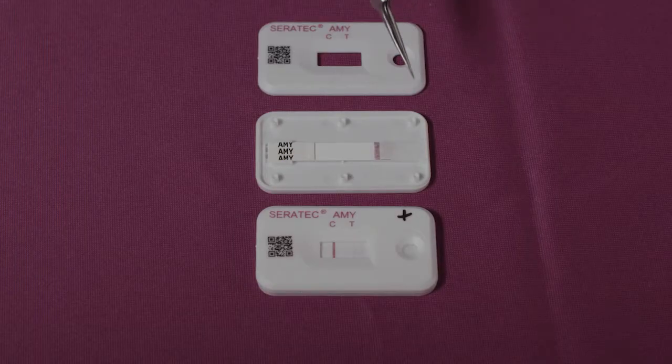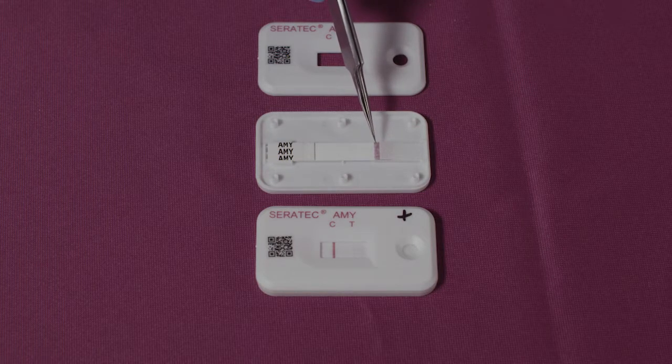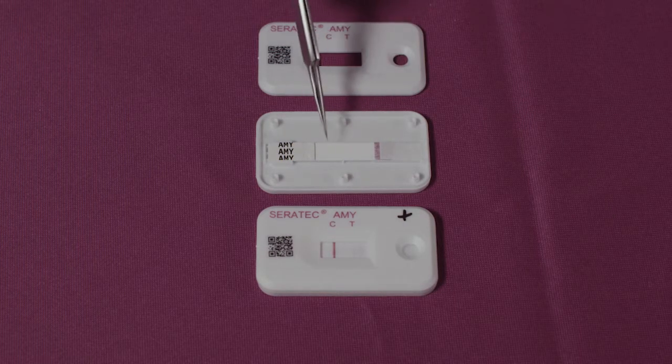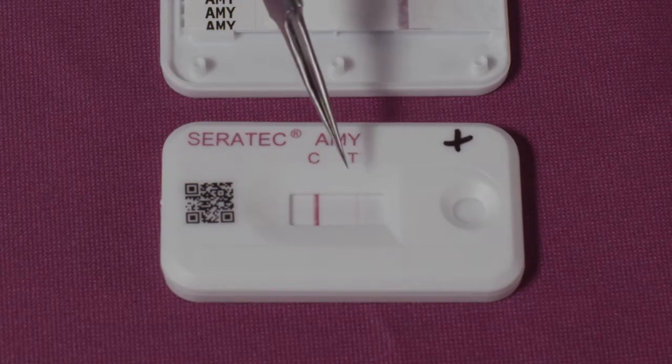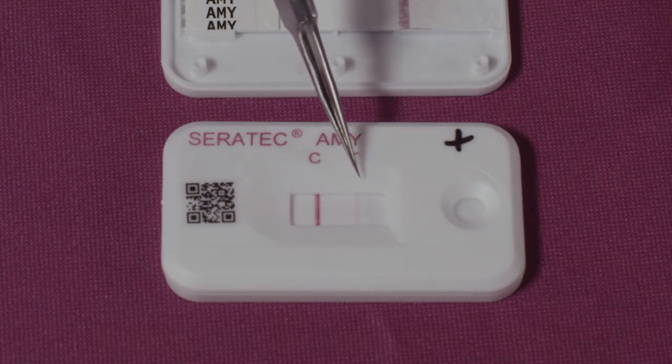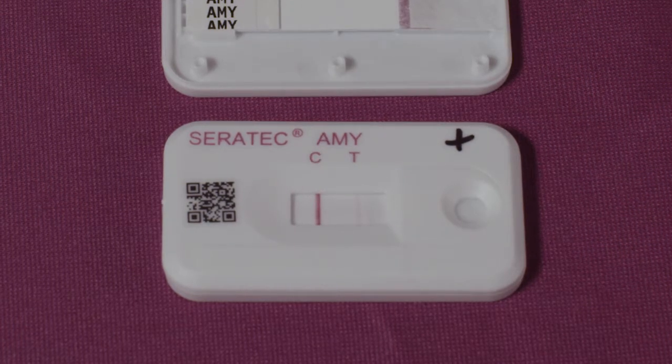The Seratec saliva test cassette consists of an absorbent pad, a gold-labeled mobile human-specific monoclonal antibody to human alpha-amylase, a nitrocellulose membrane, a second different fixed human-specific monoclonal antibody to human alpha-amylase, and a control line containing anti-mouse antibodies.